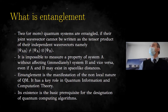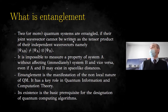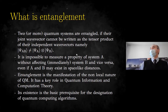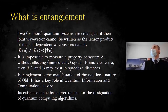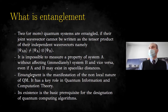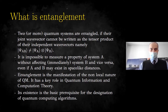What is entanglement? To make a long story short, two or more quantum systems are entangled if their joint quantum state in Hilbert space cannot be written as a tensor product of their independent wave vectors. It is impossible to measure a property of system A without affecting immediately system B and vice versa, even if A and B may exist at space-like distances. This is the non-locality of quantum mechanics. Entanglement plays a key role in quantum information and quantum computation theory, and is the basic prerequisite for the design of quantum computing algorithms.